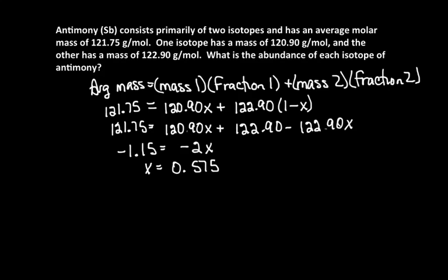And that's the fraction of isotope 1. So the isotope with a mass of 120.90 grams per mole is 57.5% of the antimony. The other isotope with a mass of 122.90 grams per mole must be the rest, which is equal to 42.5% of the antimony.